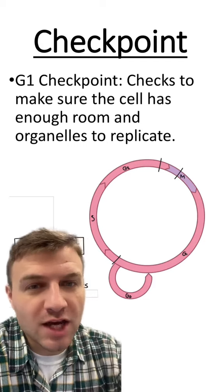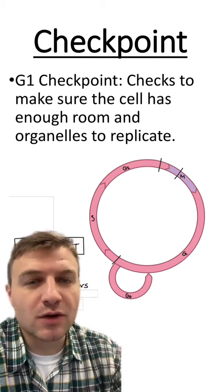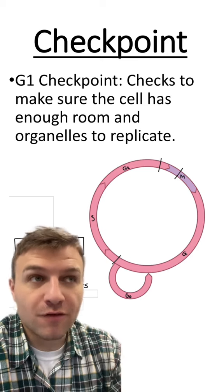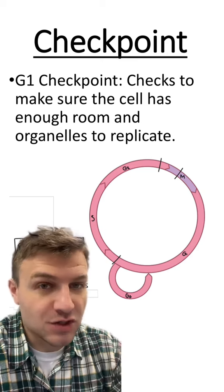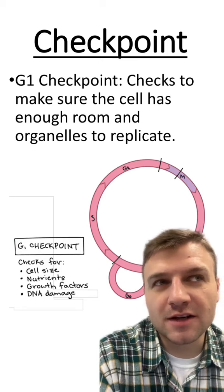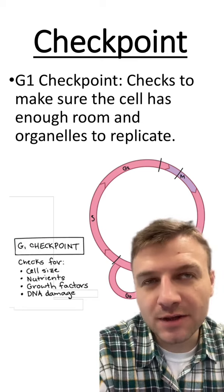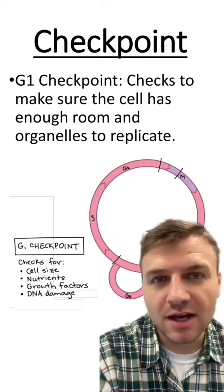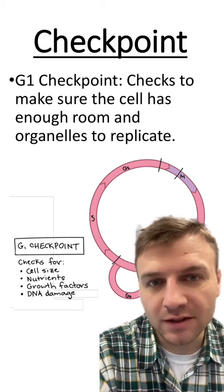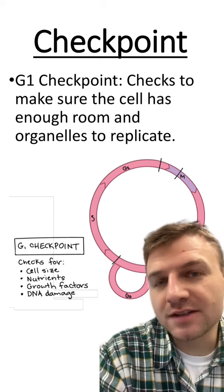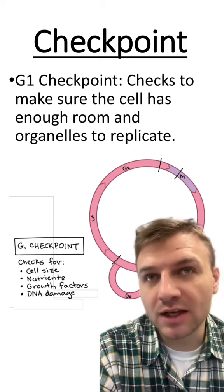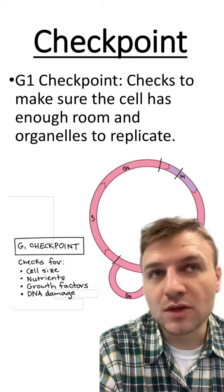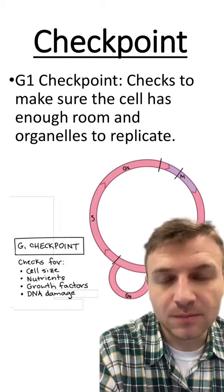During the G1 checkpoint, the cell is going to make sure that there is enough room and enough organelles for replication. The cell will also check if there is DNA damage, to make sure that everything within the cell is working correctly. If the cell doesn't pass the G1 checkpoint, it will be put in cell arrest, which means it will not continue through the cell cycle.